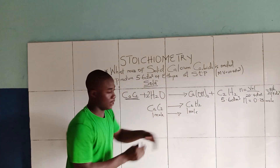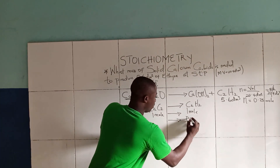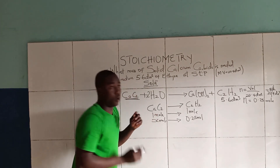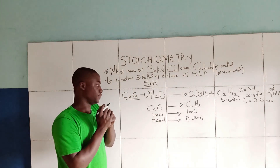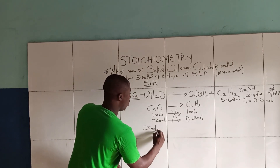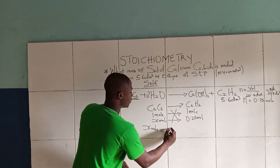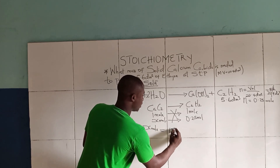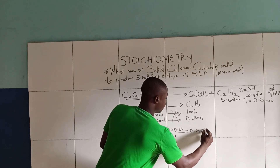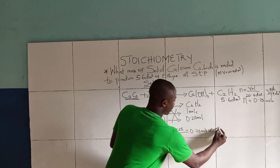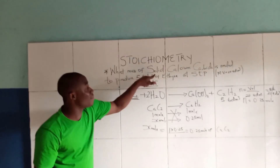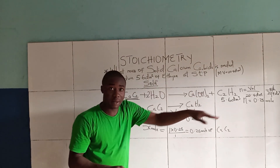Since the molar ratio is 1:1, 0.25 moles of acetylene gives us 0.25 moles of calcium carbide. Cross-multiplying, x moles of calcium carbide equals 1 × 0.25 ÷ 1, which is 0.25 moles of calcium carbide.